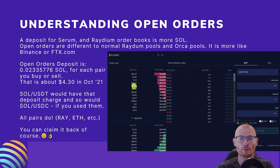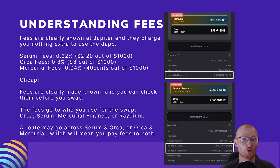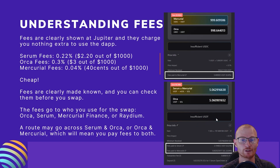This is what an order book looks like if you're using Serum or Radium. Understanding Fees: fees are clearly shown at Jupiter and they charge you nothing extra to use the dApp. Serum fees: 0.22%, so $2.20 out of $1,000. Orca fees: 0.3%, $3 out of $1,000. Mercurial fees: 0.04%, so only $0.40 out of $1,000 — they are very cheap. Fees are clearly made known and you can check them before you swap. The fees go to whichever source you use — Orca, Serum, Mercurial Finance, or Radium. A route may go across Serum and Orca, or Orca and Mercurial, which means you pay fees to both.